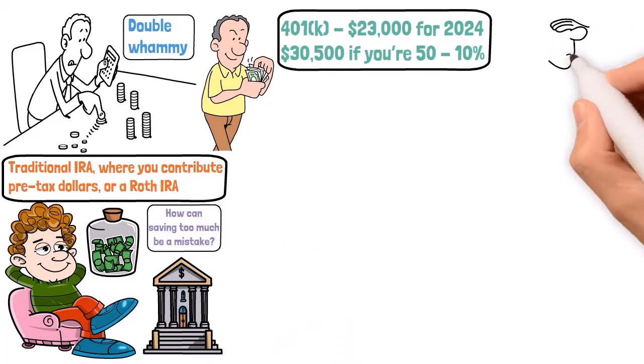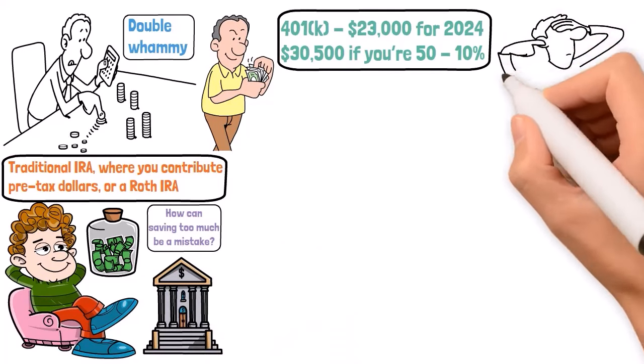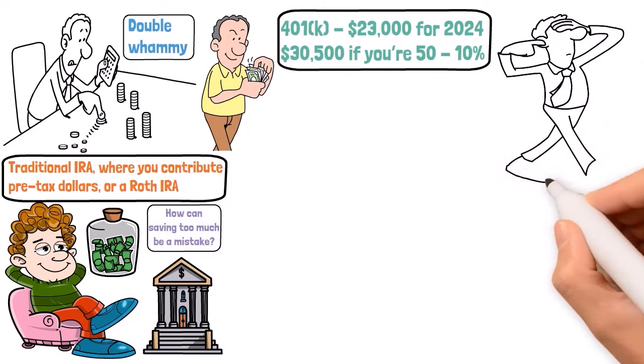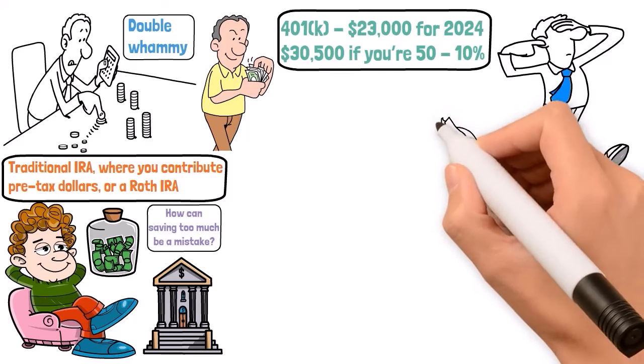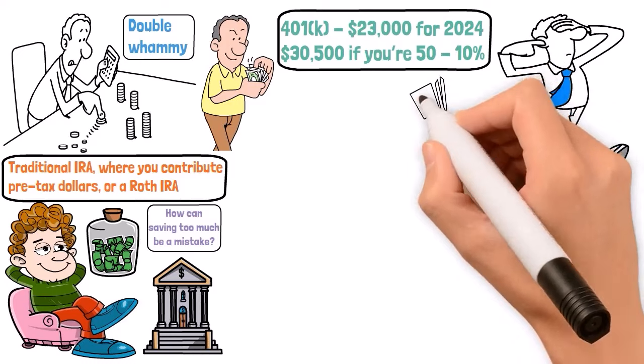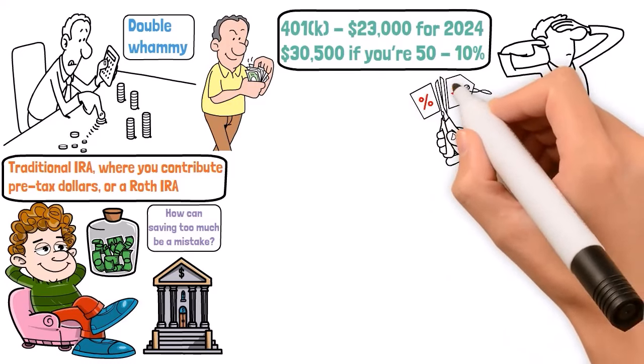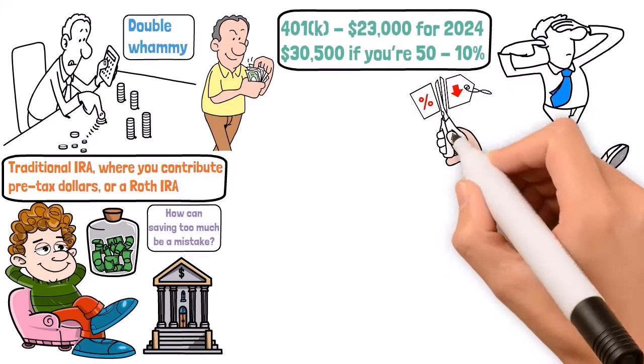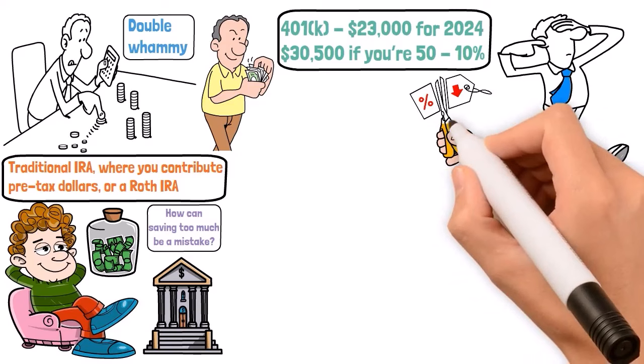Mistake number seven is a silent budget buster: not understanding how retirement taxes work. It's like navigating a maze blindfolded. Retirement taxes can be complex, but here's the gist. Different retirement income sources are taxed differently. For instance, traditional 401k and IRA distributions are taxed as ordinary income, while qualified Roth IRA withdrawals are tax-free.